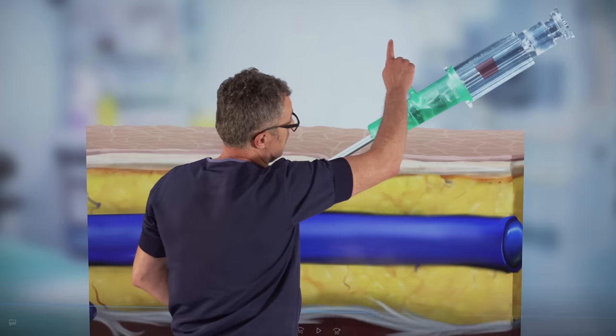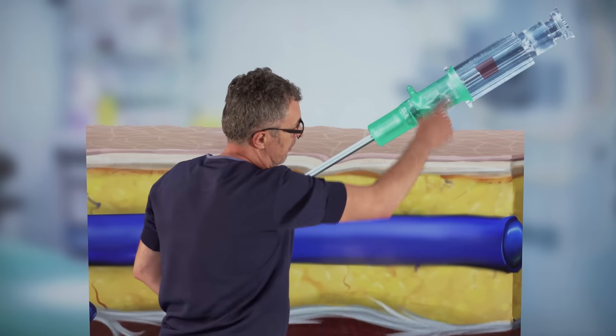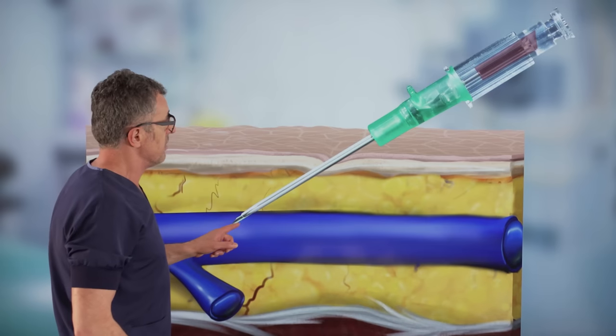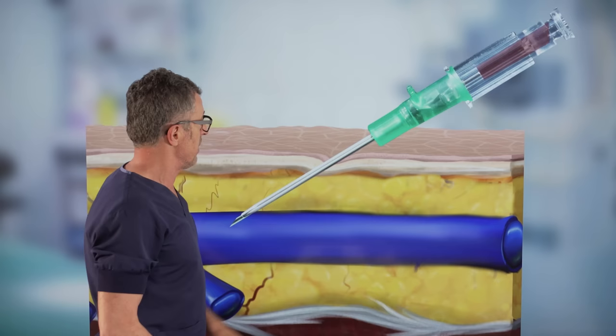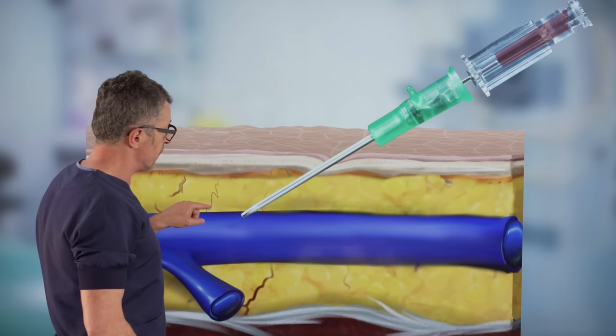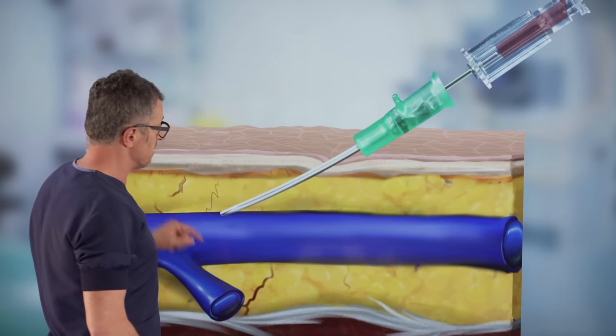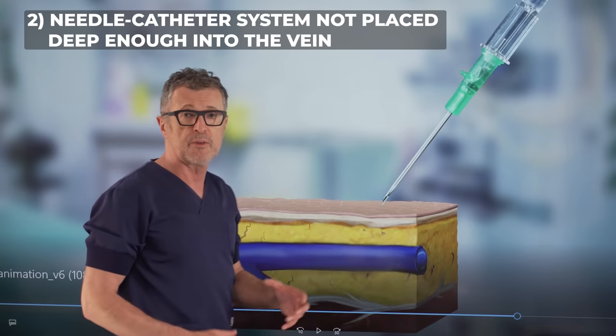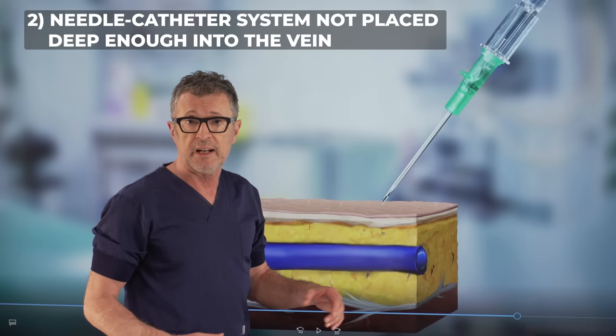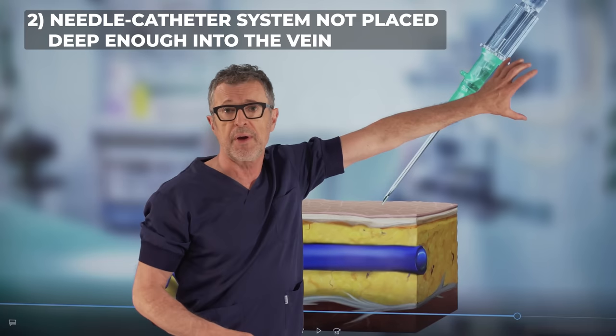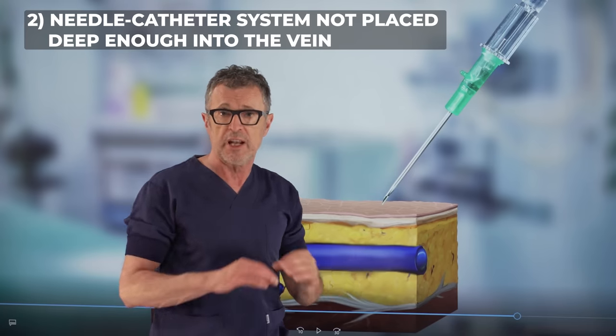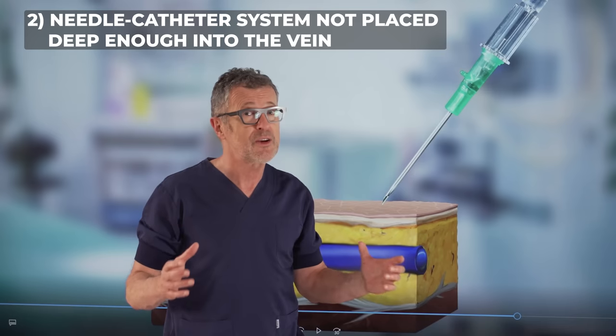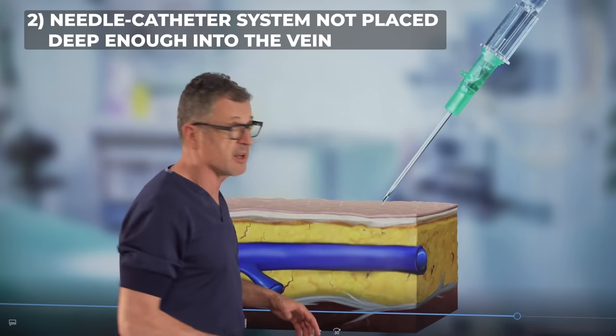So in this case, we should decrease the angle of the needle and advance the catheter needle system further. But in this example, this doesn't happen. The operator is happy with the fact that this is already inside the vessel and attempt to feed the catheter will result in a catheter placement inside the subcutaneous tissue but not intravenously. So that is one of the most common mistakes that you see all the time. And that is as soon as the flashback appears, the operator is happy with the position and tries to feed the catheter over the needle. Whereas in fact, you should advance a deeper inside the vein to make sure that there is enough slack and that the catheter is inside the vein as well.